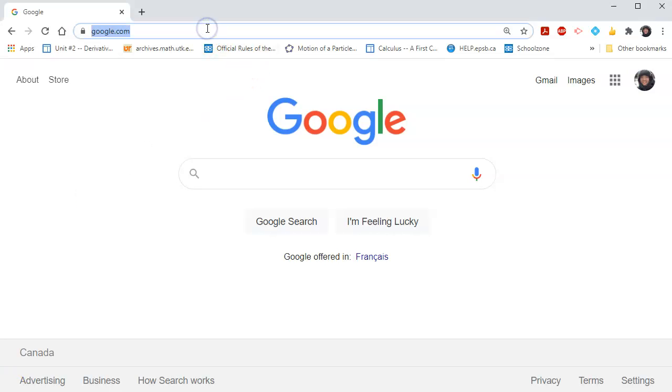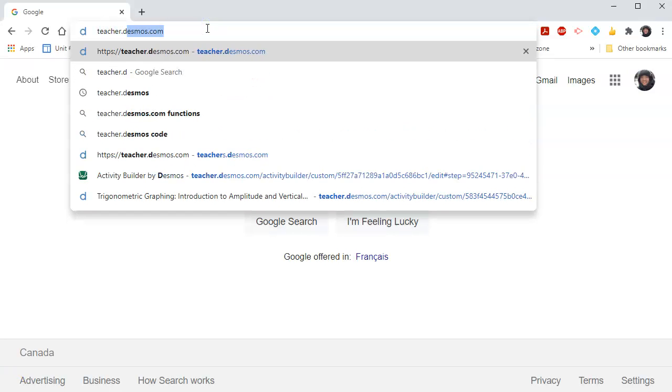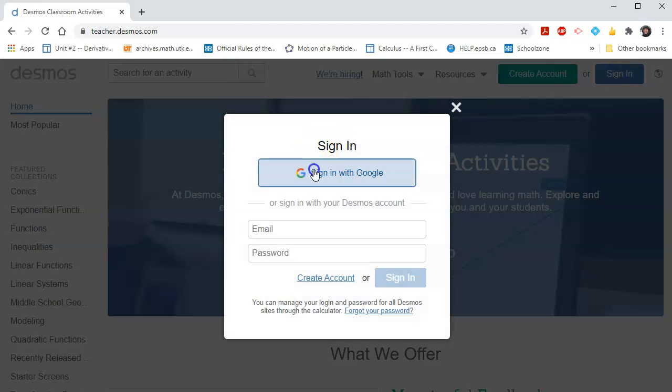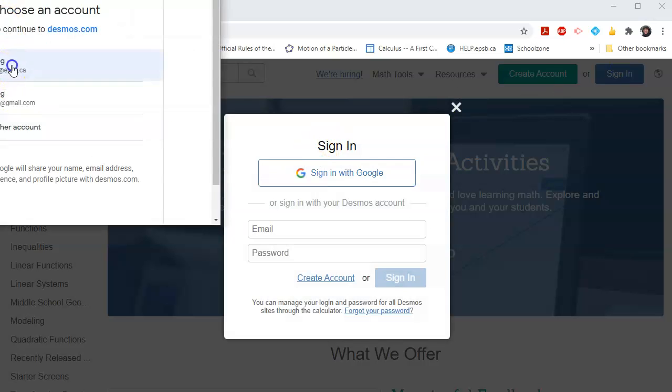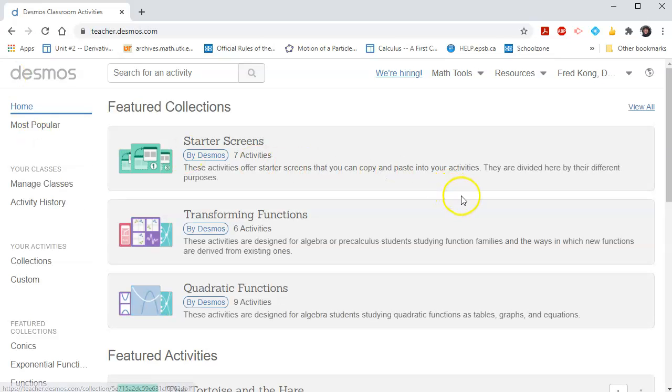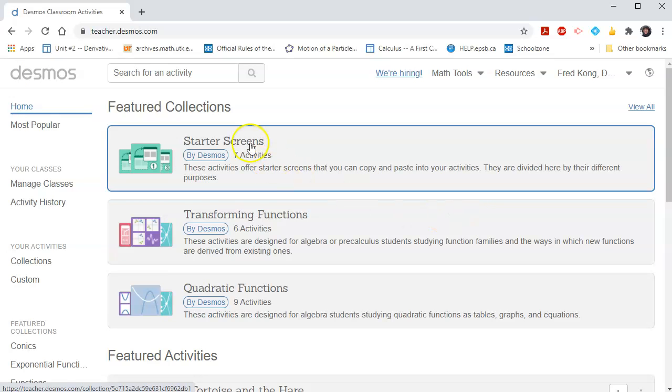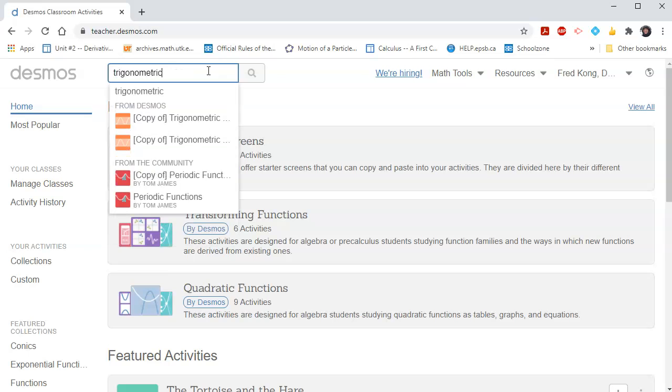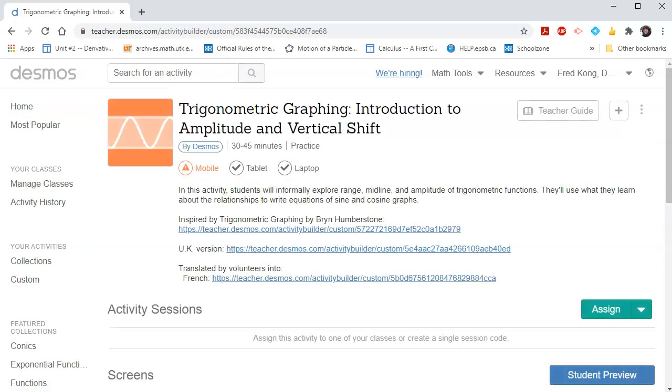So the first thing that I will do is go to teacher.desmos.com and sign in with Google with my school account. As you can see, you land on a page where you can look for activities or browse activities by topic. But if you have something in mind, you can just type it into the search bar here. I'm looking for trigonometric graphing because that's what I'm teaching my Math 30-1s at the moment.